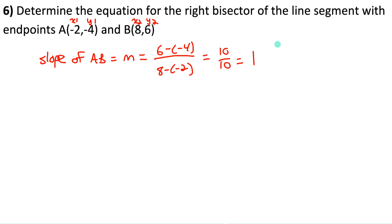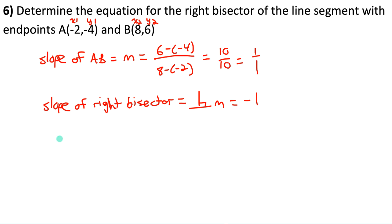Perpendicular slopes are negative reciprocals of each other. Rewrite 1 as 1/1, flip it and change its sign: the perpendicular slope is −1/1 = −1. Now I need a point on the right bisector — it passes through the midpoint of AB. Find the midpoint: average x-coordinates (−2 + 8)/2 = 3, average y-coordinates (−4 + 6)/2 = 1. Midpoint is (3, 1).